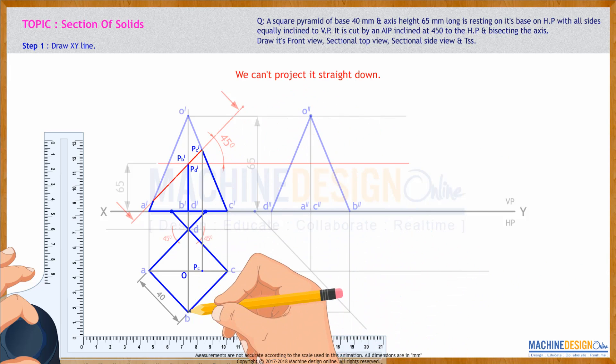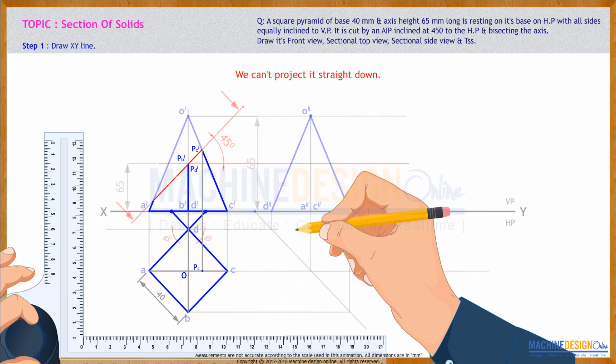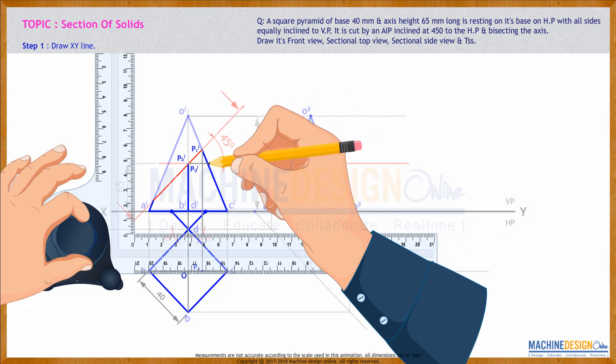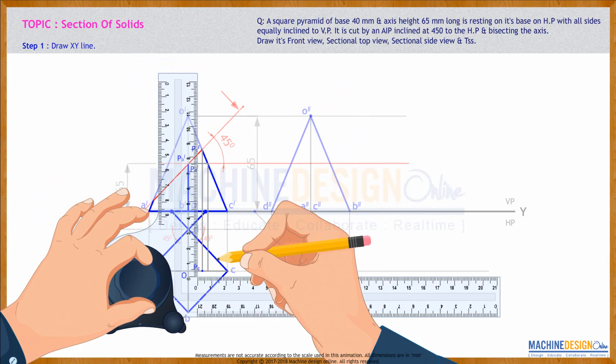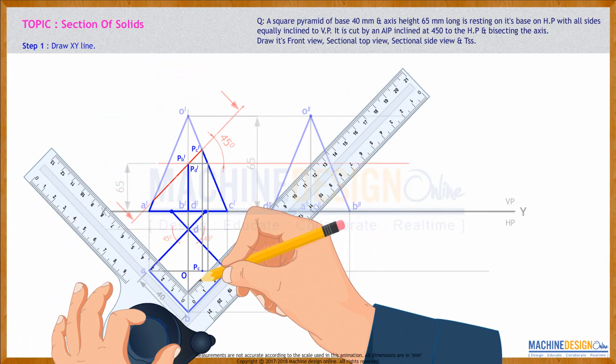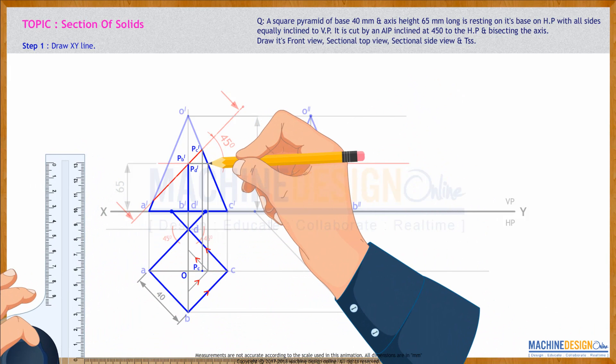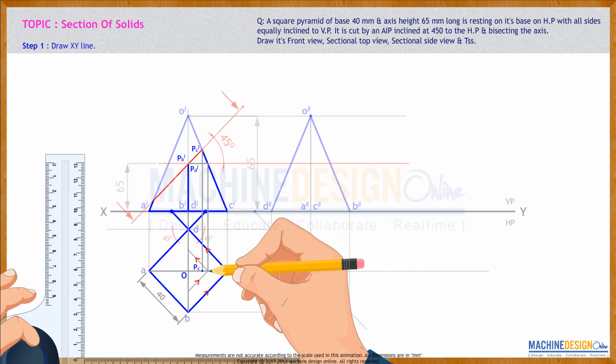Now see, this point again we can't project straight down. Same issue, like the previous sum. So what we can do, we can take PP dash on the extreme edge which will be over here. Then you go down till here and then you draw parallel to base. See this, from here to here, horizontal, wherever it will cut, from there you go down.